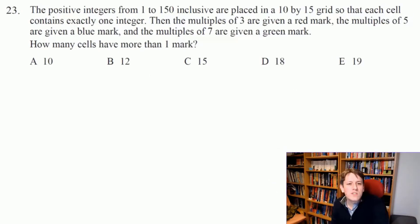Which numbers get more than one mark here? It's got to be something that's a multiple of three and a multiple of five, or a multiple of five and a multiple of seven, or a multiple of three and a multiple of seven, or possibly a multiple of all of them. So multiples of 15 get two marks, multiples of 21 get two marks, and multiples of 35 get two marks as well.